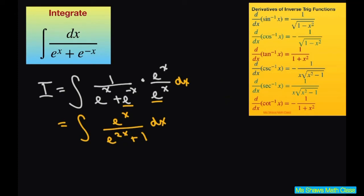Now let's use substitution and we're going to let t equal e to the x, therefore derivative of t equals e to the x dx.